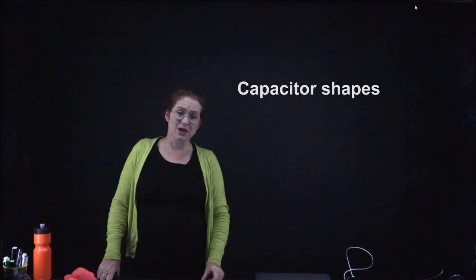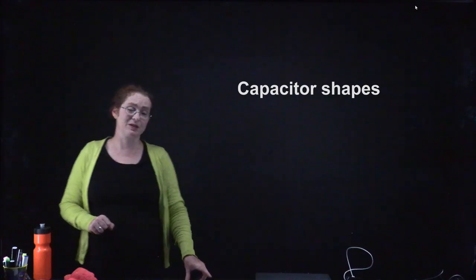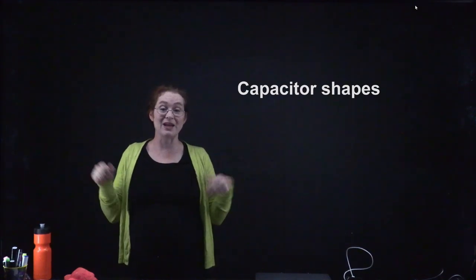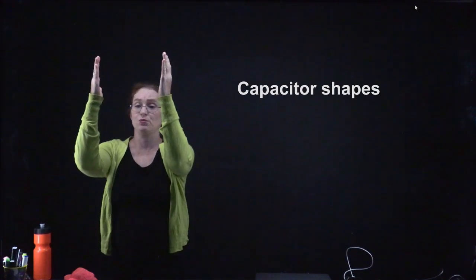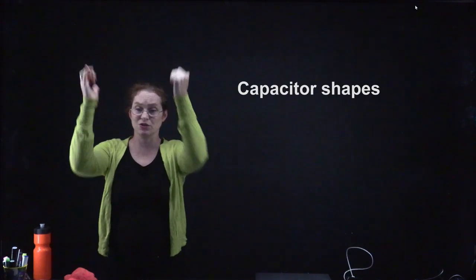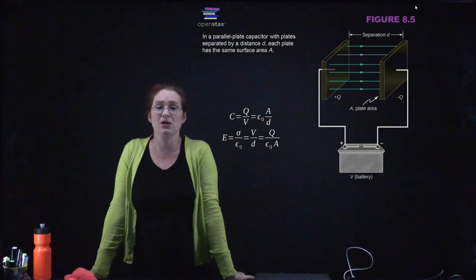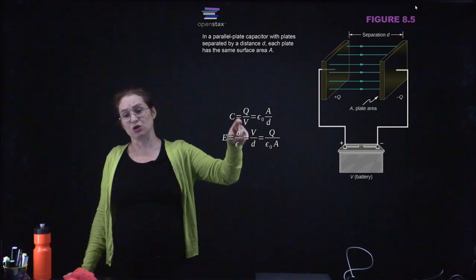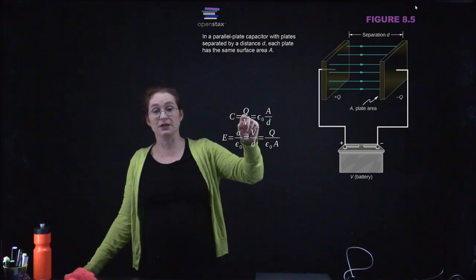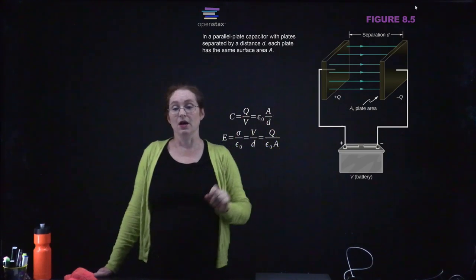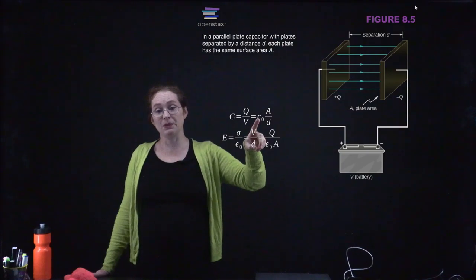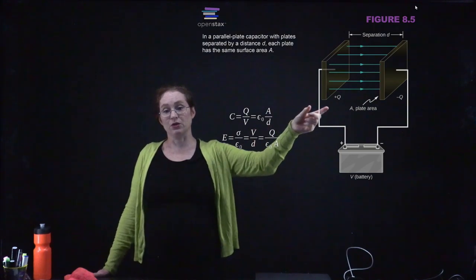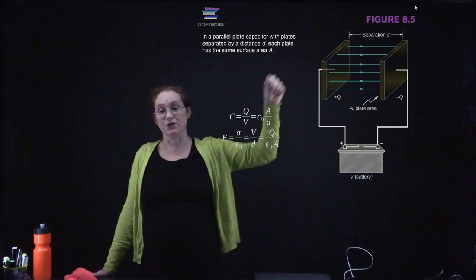So we can talk about capacitor shapes. Your book introduces a number of different capacitor shapes. The archetypal capacitor is a parallel plate capacitor with two parallel plates — positive charge on one side and negative charge on the other. This shows you the equations for the capacitance: the capacitance is always equal to the charge divided by the voltage.